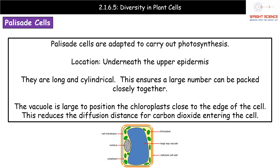The upper epidermis is a transparent layer at the top. The palisade cells have a very large vacuole in the center, which pushes those chloroplasts — containing the photosynthetic pigments — really close to the edge of the cell. The whole idea is to set everything up perfectly for photosynthesis: if the chloroplasts are close to the edge of the cell, we have a shorter diffusion distance for the carbon dioxide entering the cell to reach those chloroplasts.